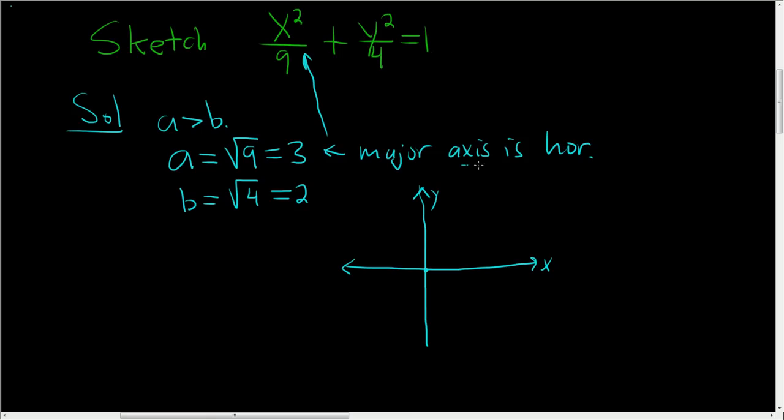Alright, the major axis is horizontal. So we go left and right by 3. 1, 2, 3. 1, 2, 3. And then we go up and down by 2. 1, 2. 1, 2. Put a dot here. Put a dot here. Put a dot here.